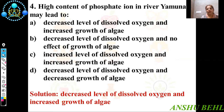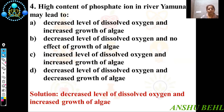Fourth question: High content of phosphate ions in river Yamuna may lead to what? If phosphate ions are too much in water, that will lead to growth of algae in water. If growth of algae occurs, then dissolved oxygen will decrease — that is called BOD, biological oxygen demand. Because of the biological oxygen demand by algae, river water will have a deficiency of dissolved oxygen and will not be fit for aquatic life. The correct option is decreased level of dissolved oxygen and increased growth of algae.